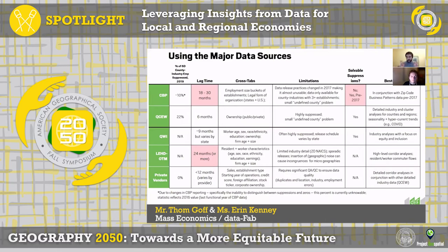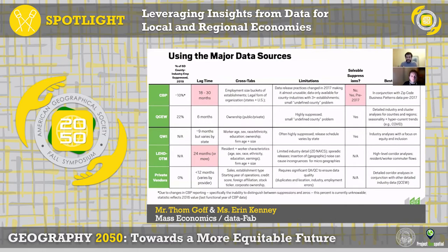Another distinguishing factor is that CBP data, while they used to be a great data source, recently changed their reporting practices, and sadly it really made the dataset almost unusable. The issue is that you can no longer distinguish between what's a zero and what's just suppressed — you just don't even know what's in there anymore.